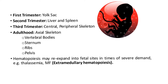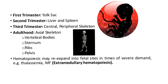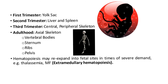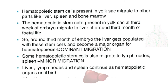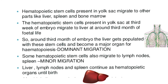In adulthood, hemopoiesis occurs in the bone marrow — specifically the red bone marrow of the axial skeleton: vertebral bodies, sternum, ribs, and pelvis. The hematopoietic stem cells present in the yolk sac migrate to other places like liver, spleen, and bone marrow.